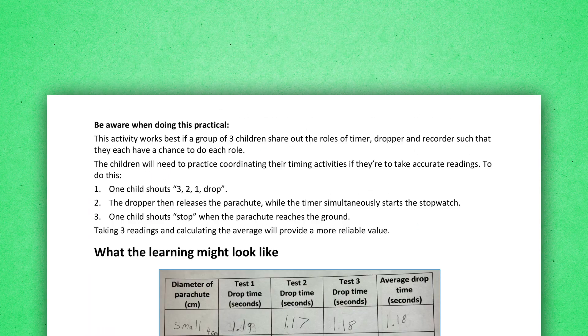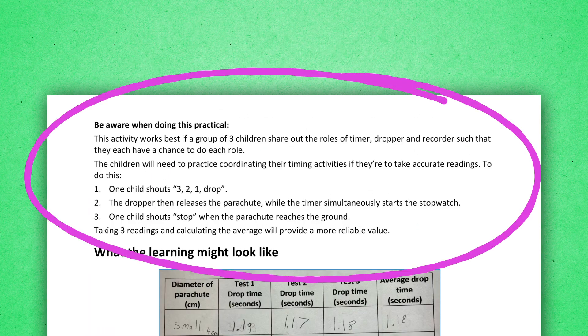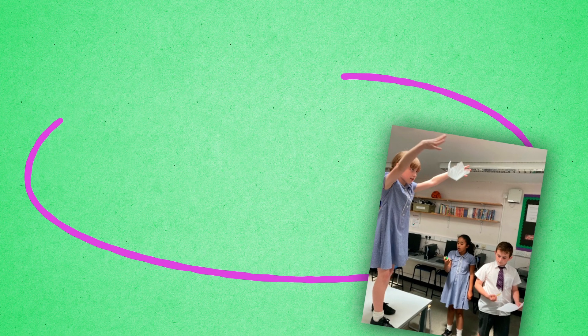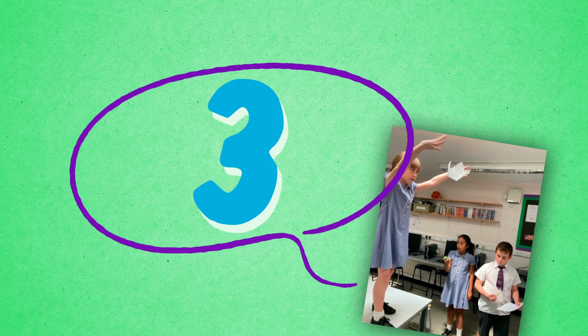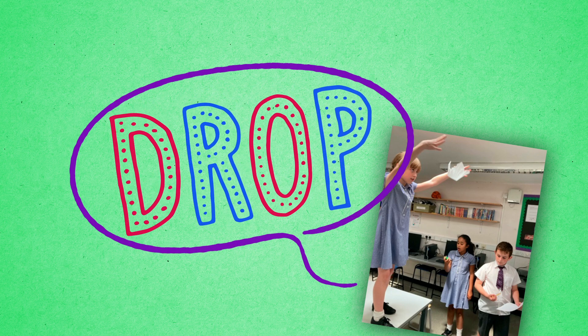Some activities include 'be aware when doing this practical.' These are based on our experiences during trialling and represent things we learned about how to make the activity work as well as possible.